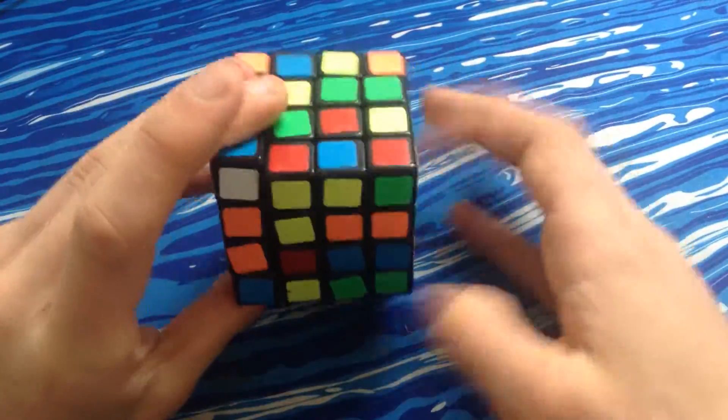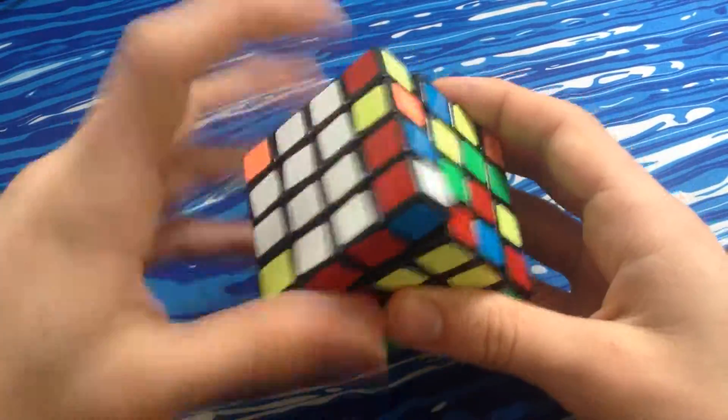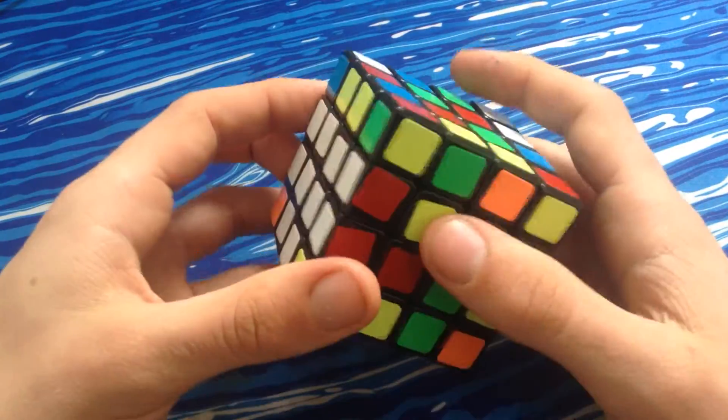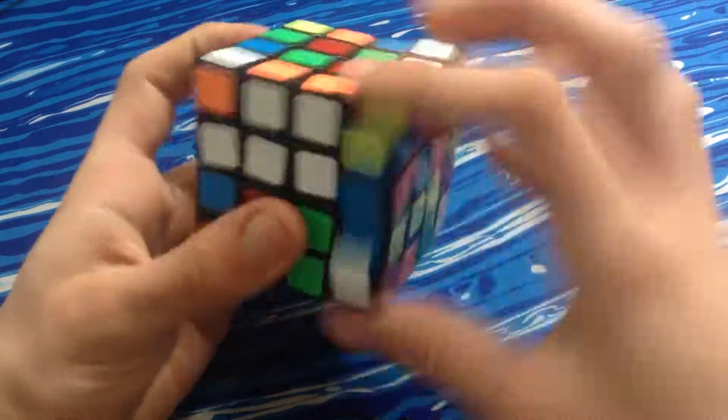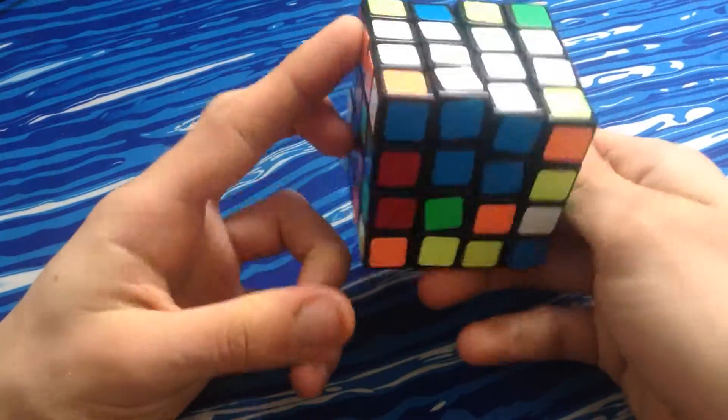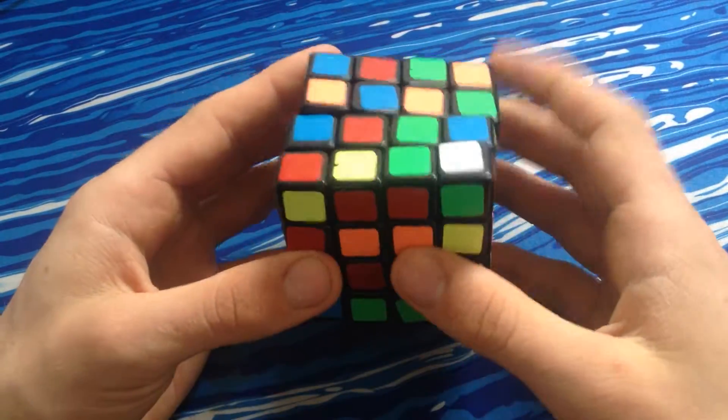So I'll solve the yellow part there, do an R2 to continue to preserve them, go to where it isn't so I can preserve them. I've never had that happen in an actual solve before, but still.